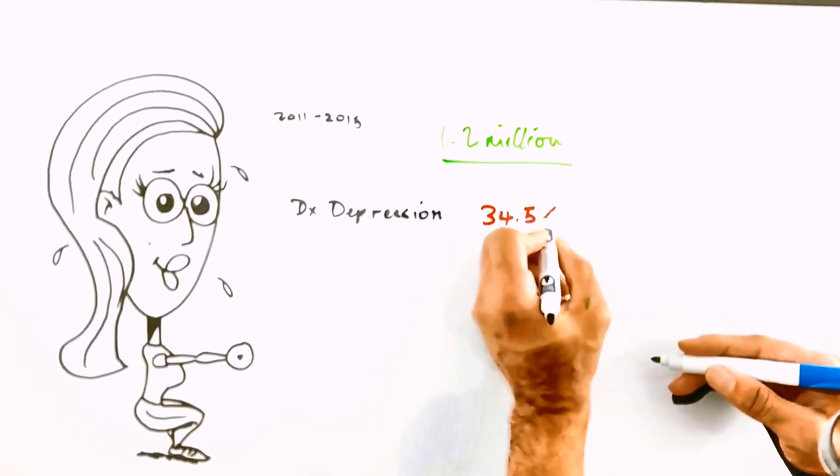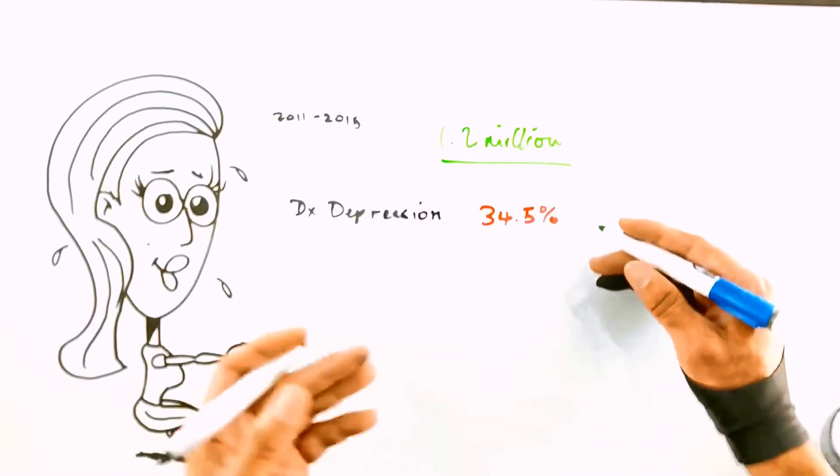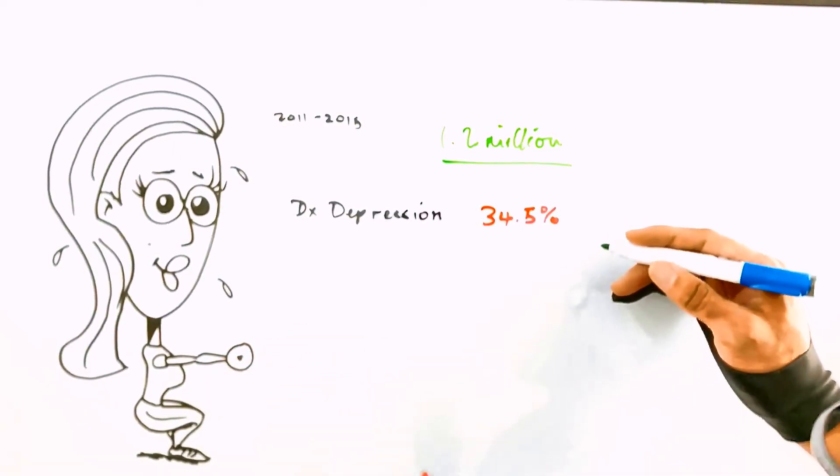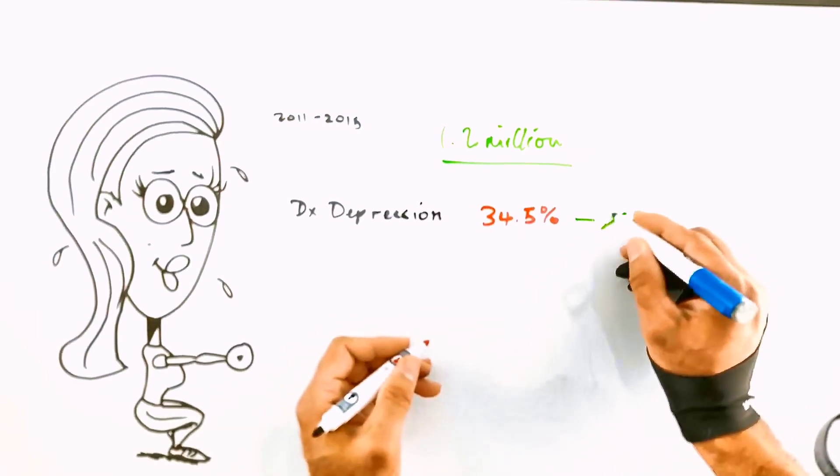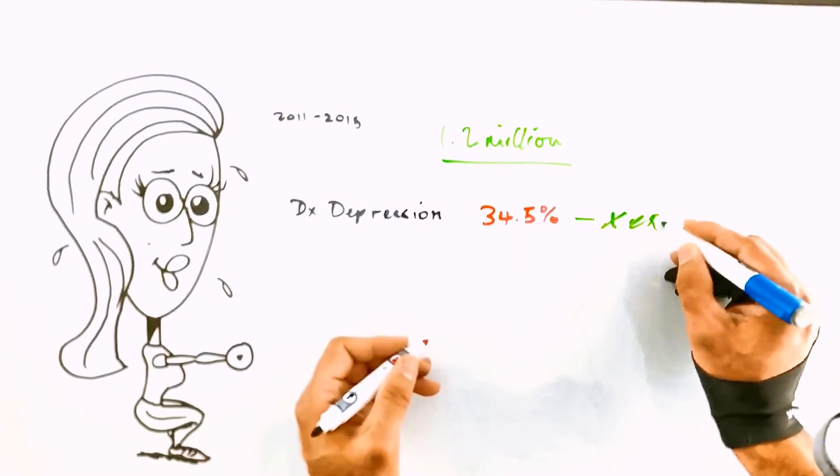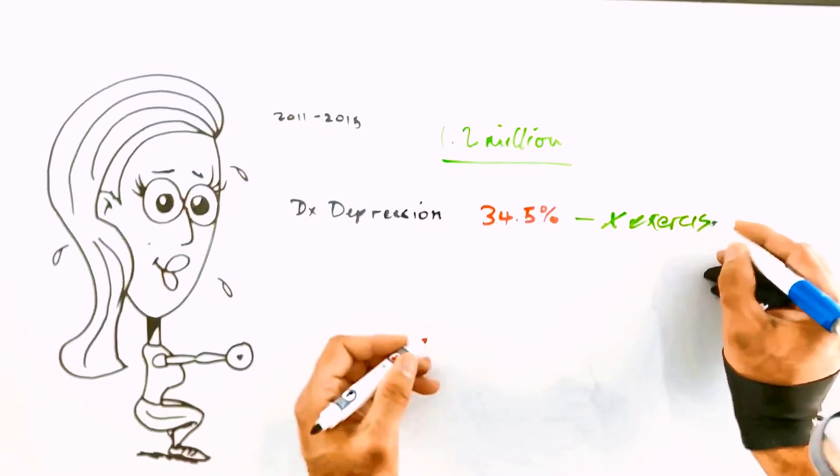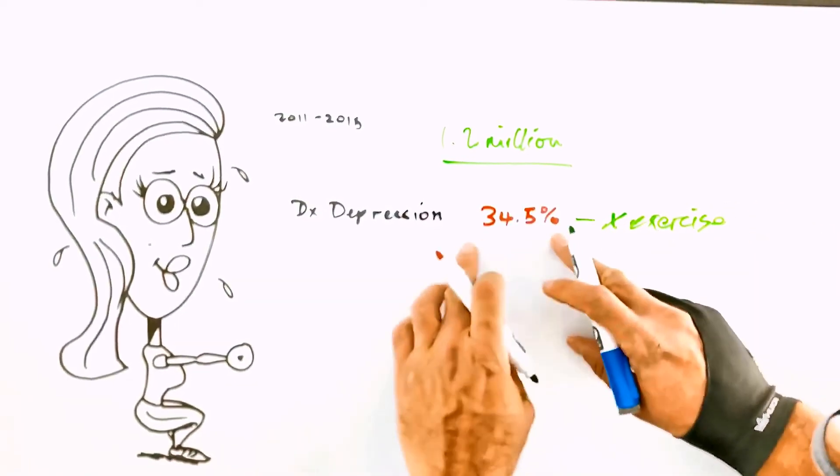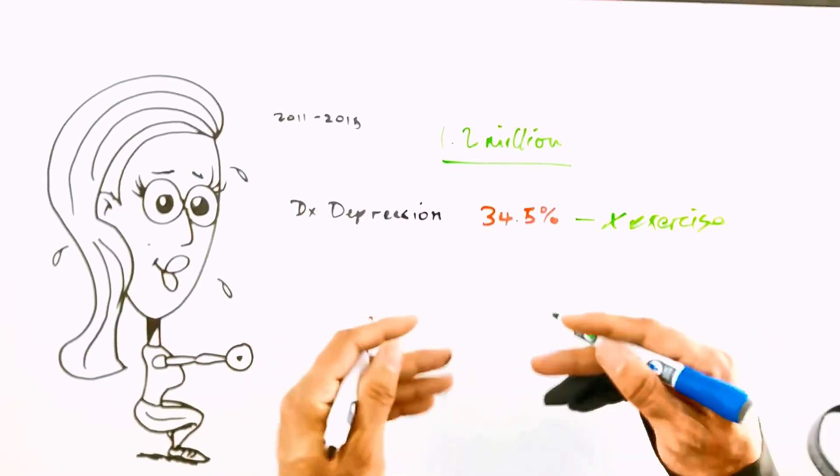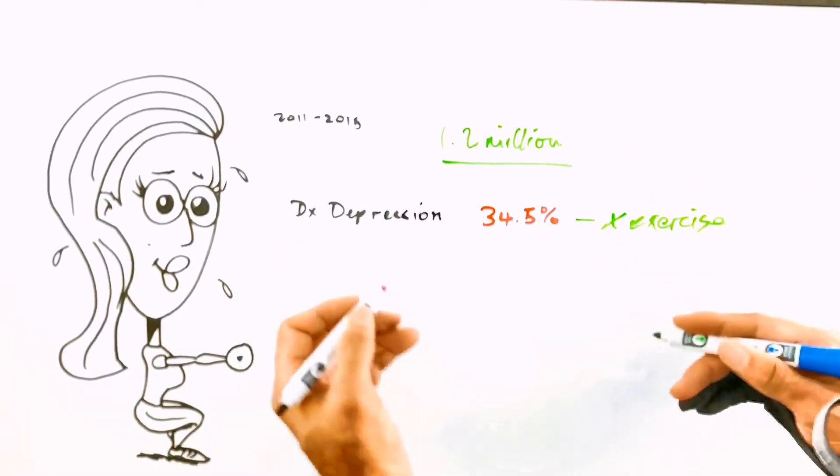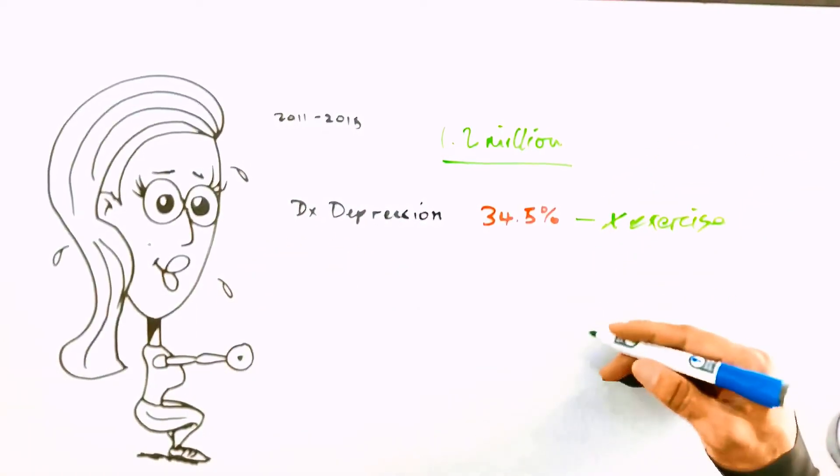A full third, or 34.5%, reported markedly reduced mental health burden versus those who did no exercise. So that's pretty remarkable. In other words, exercise can work pretty much as well as a drug for controlling depression symptoms and other mental health problems like anxiety.